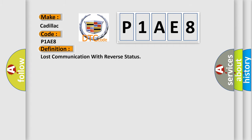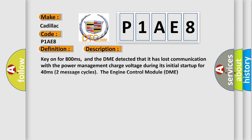The basic definition is Lost Communication with Reverse Status. And now this is a short description of this DTC code. Key on for 800 milliseconds, and the DME detected that it has lost communication with the power management charge voltage during its initial startup for 40 milliseconds.